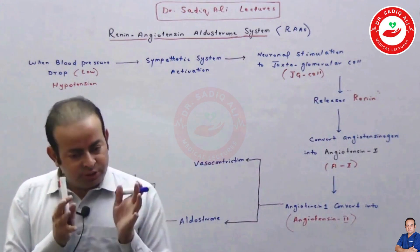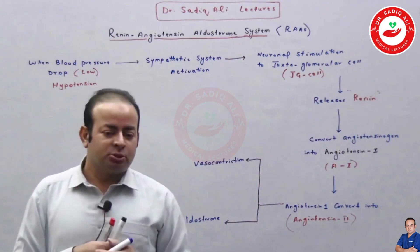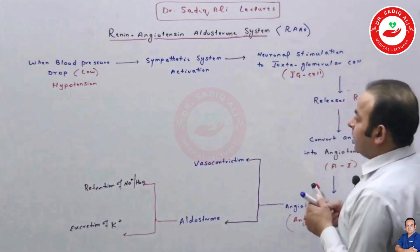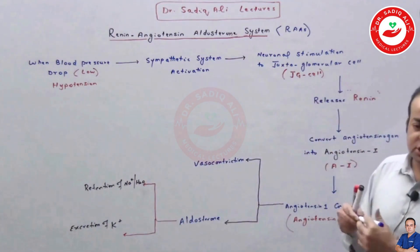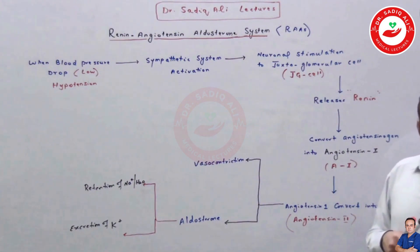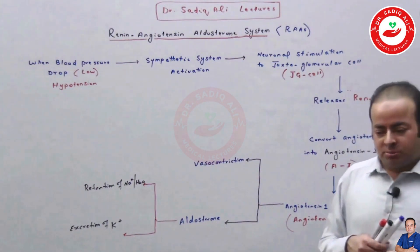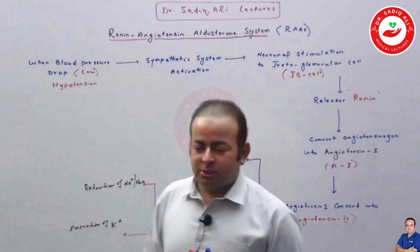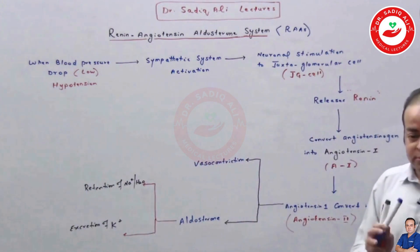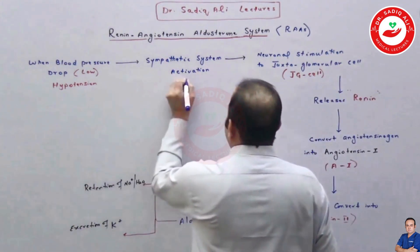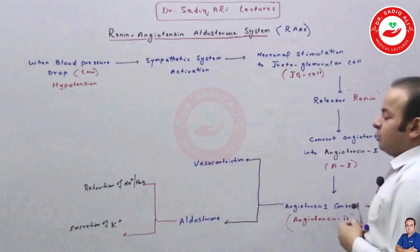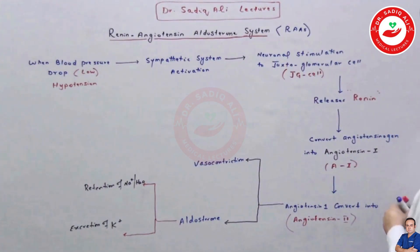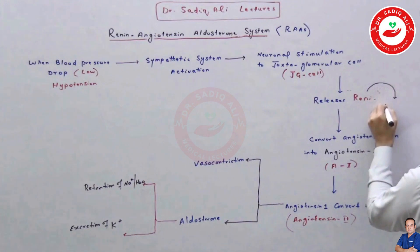The JG apparatus contains macula densa — specialized cells that are very sensitive to sodium levels in the blood. When BP is low, blood supply to the kidney is already low, so cardiac output is low. The blood flow to the kidney decreases, meaning there is decreased sodium in the blood. This decreased sodium is sensed by the macula densa of the JG apparatus. Upon activation, the JG cells release a special protein called renin.